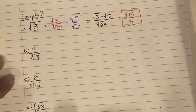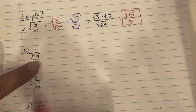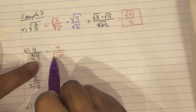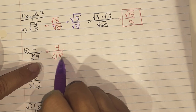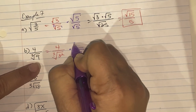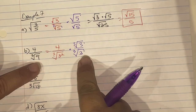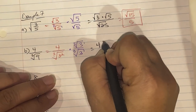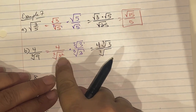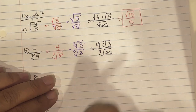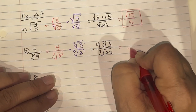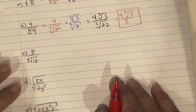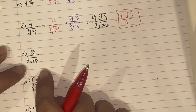Part b: rationalize 4 / ∛9. Rewrite 9 as 3², so we have 4 / ∛(3²). We need 3 pieces total; we only have 2, so multiply top and bottom by ∛3 (one more piece). This gives 4∛3 / ∛(3³) = 4∛3 / ∛27 = 4∛3 / 3.